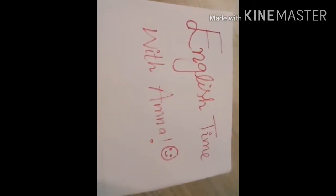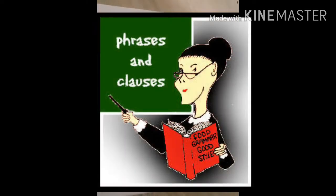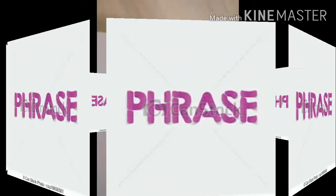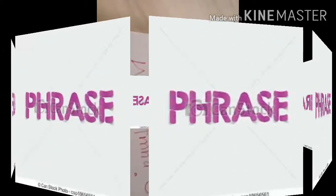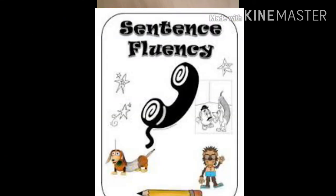That covers the basic structure of a sentence. Furthermore, let's talk about phrases and clauses, which also come into sentence structure. A phrase is a group of closely related words without a subject or predicate — so it is an incomplete sentence.